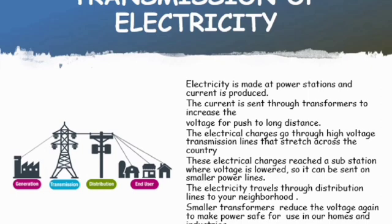The electrical charges go through high voltage transmission lines that stretch across the country. These electrical charges reach a substation where voltage is lowered so it can be sent on smaller power lines. The electricity travels through distribution lines to your neighborhood. Smaller transformers reduce the voltage again to make power safe for use in our homes and industries.